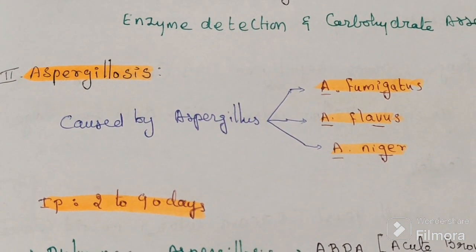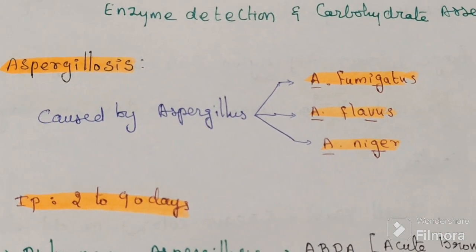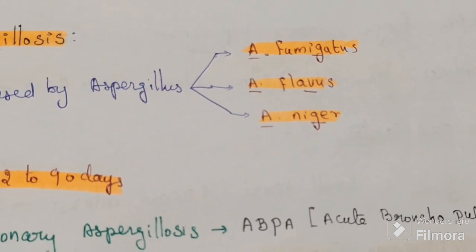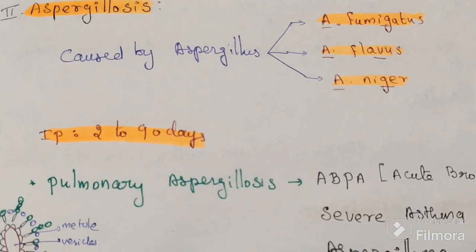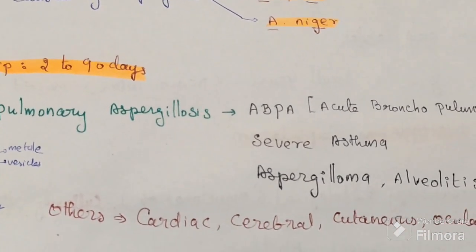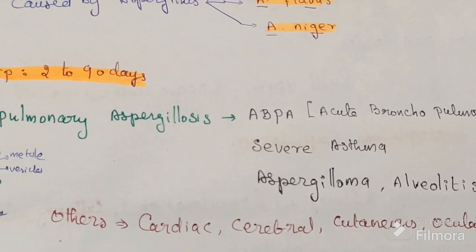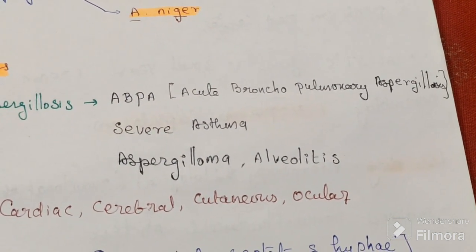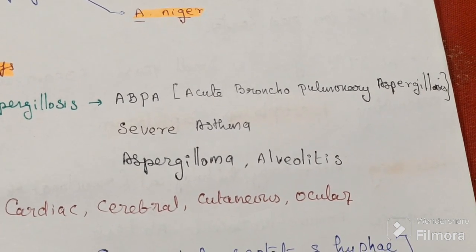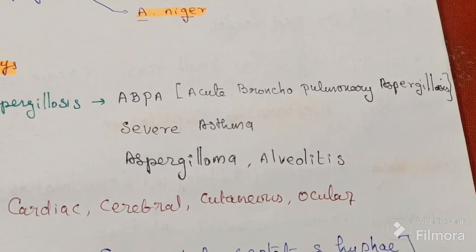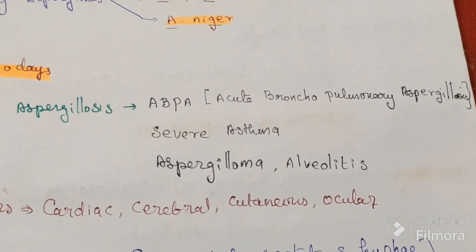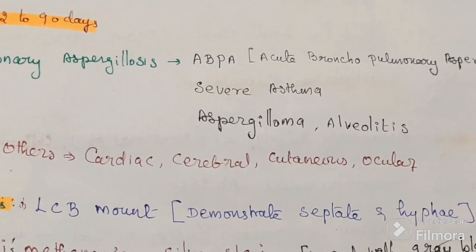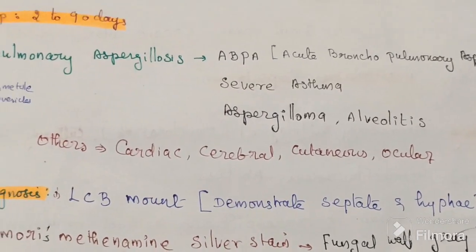The second opportunistic fungus is Aspergillus, causing aspergillosis. It is caused by Aspergillus fumigatus, Aspergillus flavus, and Aspergillus niger. Incubation period is 2 to 90 days; entry is through inhalation. It mainly causes pulmonary aspergillosis, including acute bronchopulmonary aspergillosis, severe asthma, aspergilloma, and alveolitis. It can also affect cardiac, cerebral, cutaneous, and ocular regions.